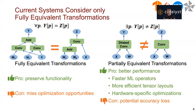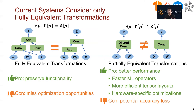The tensor program optimization space contains a spectrum of partial equivalent transformations, where the two programs may produce different results for some output positions. Partially equivalent transformations may lead to better runtime performance by using faster ML operators, more efficient tensor layouts, and other hardware optimizations. But these transformations may change the functionality of a network and result in potential model accuracy loss, which is also why existing systems consider only fully equivalent transformations.